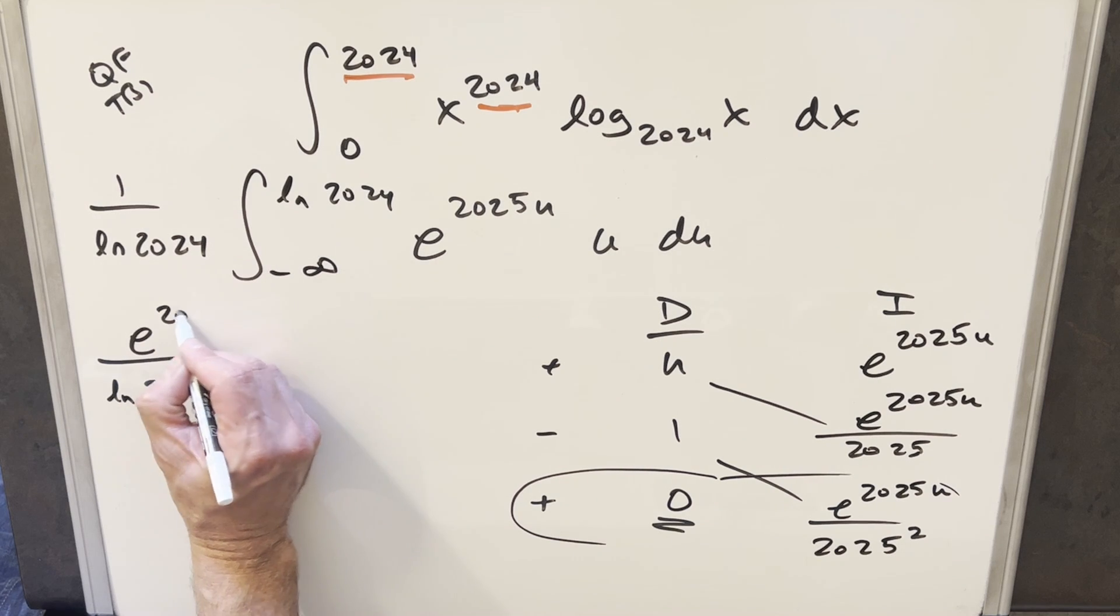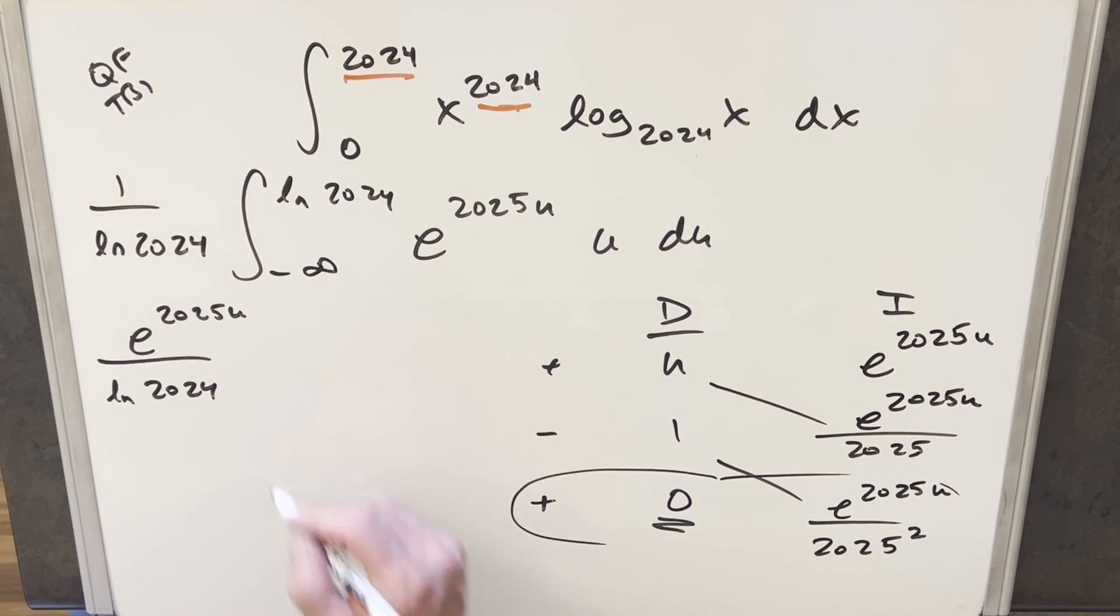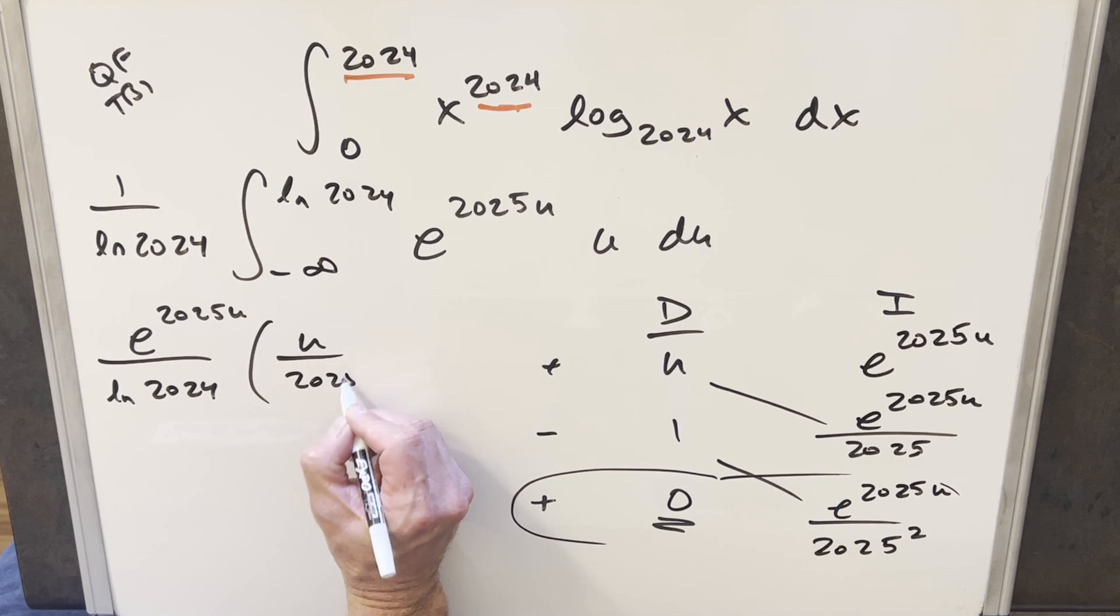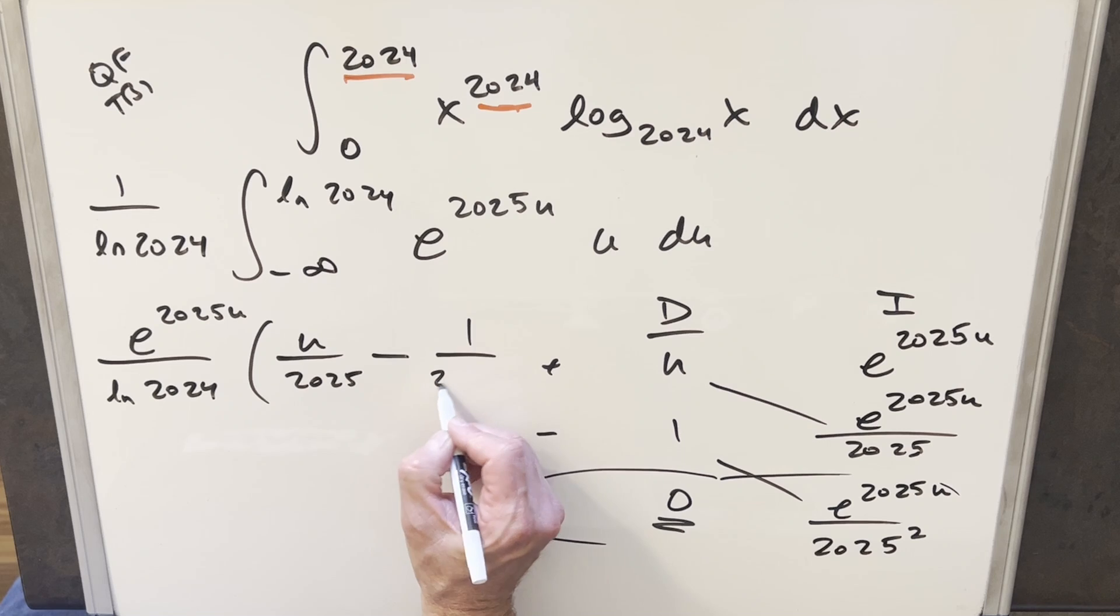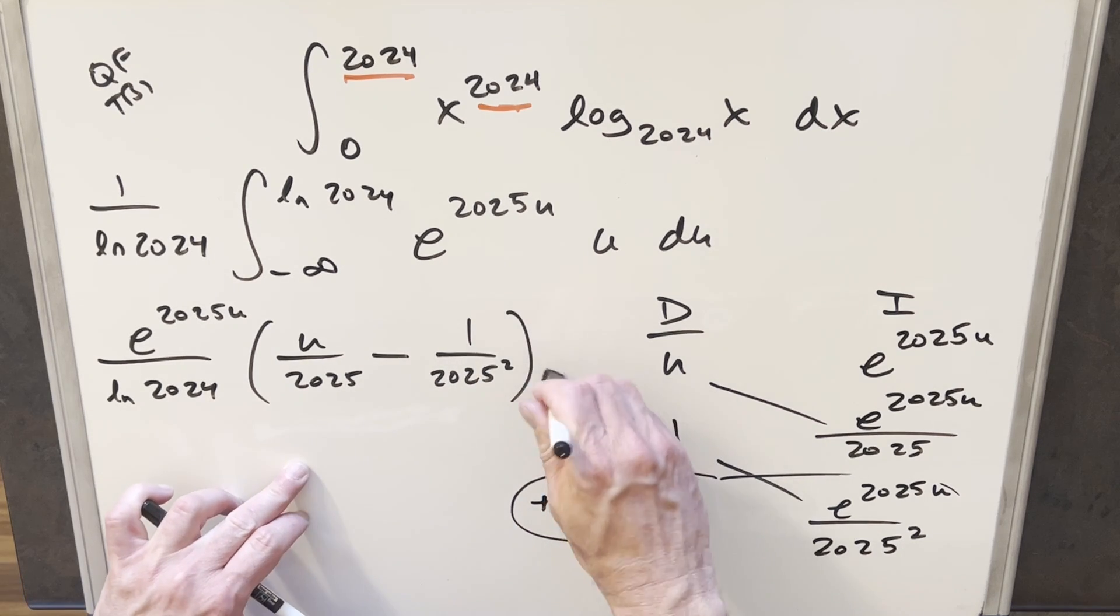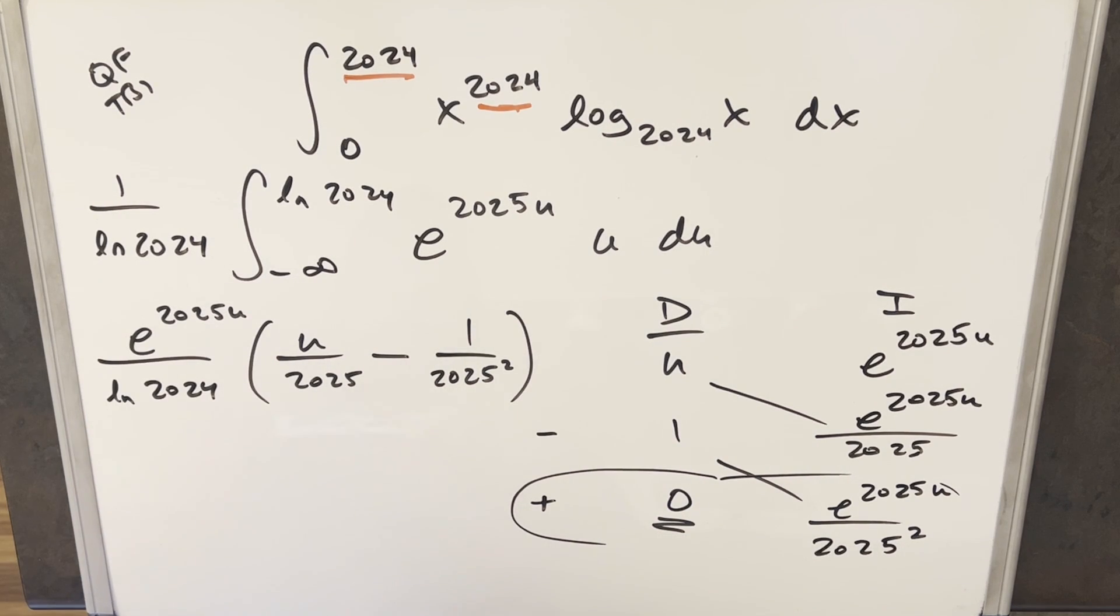And then what's left, we're going to have positive u here over 2025. This is just a 1. So this is going to be minus 1 over 2025 squared here. And then we're just going to need to evaluate this with our bounds. This is going to be evaluated from minus infinity to natural log 2024.